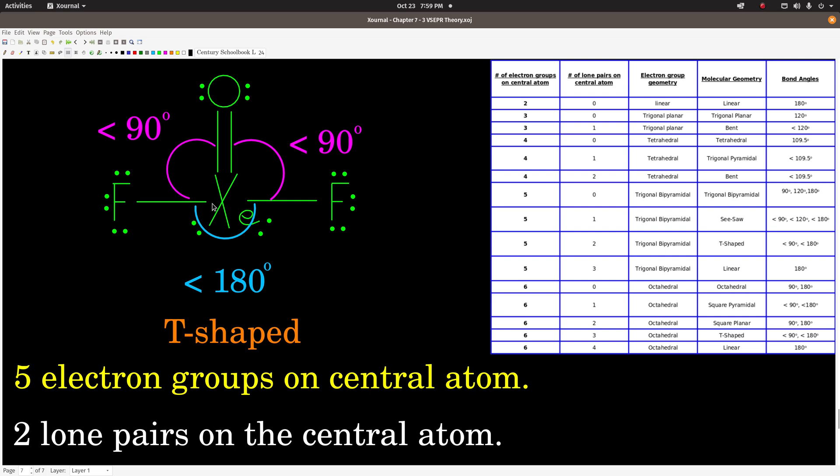Lewis structure first. Xenon's the central atom. It has an expanded octet, which is just fine, and we minimize formal charges. So there's the Lewis structure. So all we do is we look at this Lewis structure, count up the number of electron groups on the central atom: one, two, three, four, five. Remember guys, a double bond or a triple bond still only counts as one electron group here.